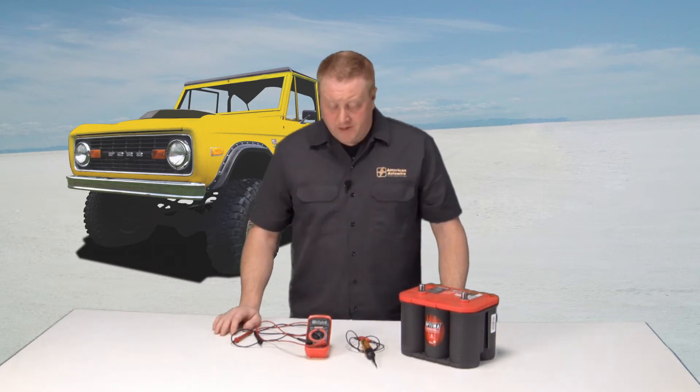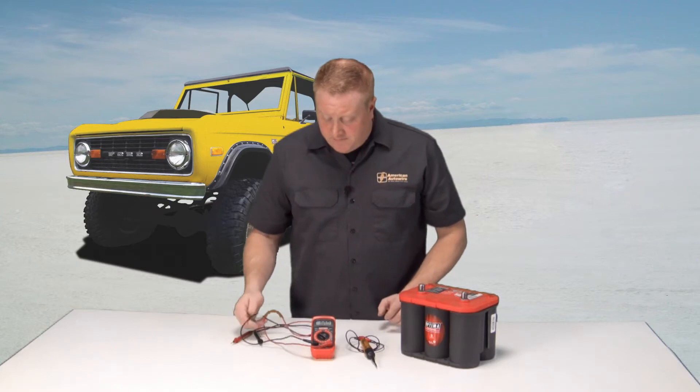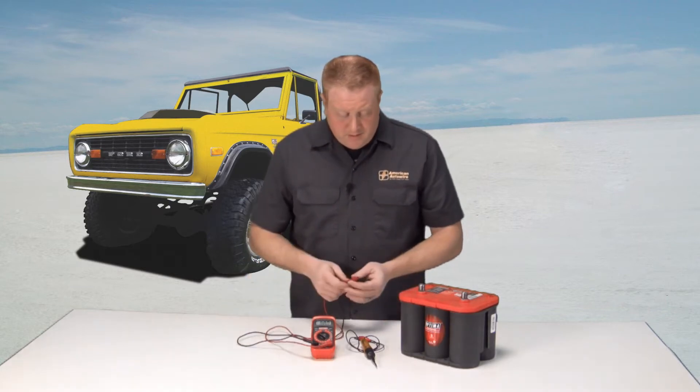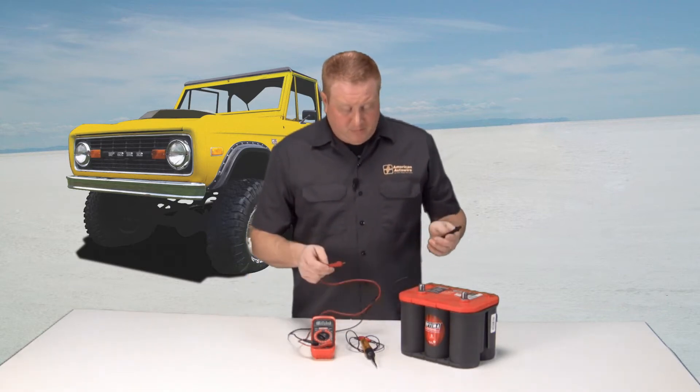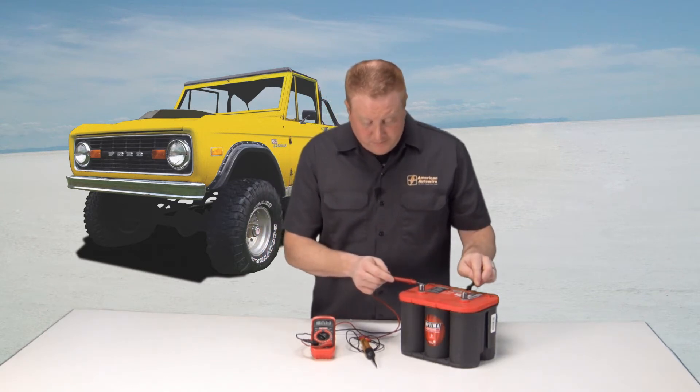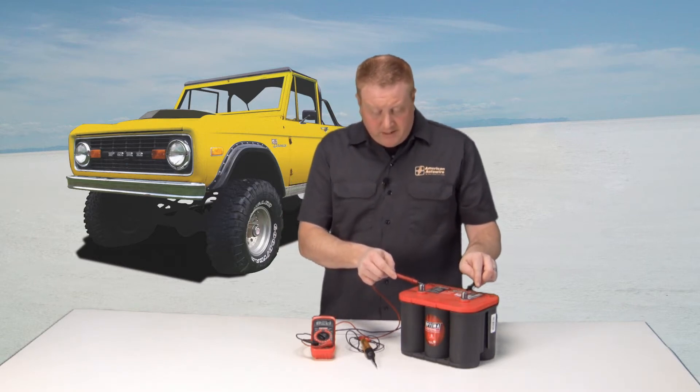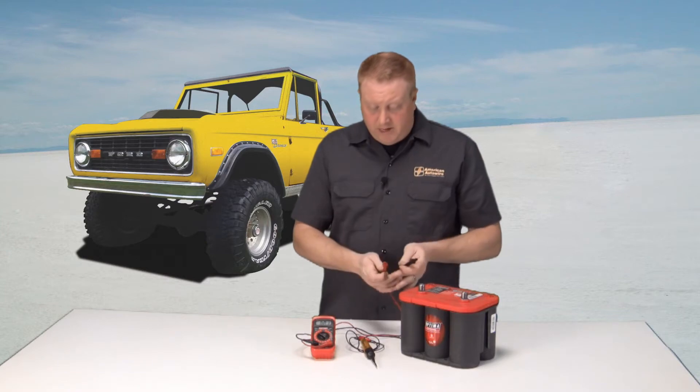It's always a good idea to test your meter and your test light before you go crawling under the dash of your car, just in case there's any problems with the equipment. To test the meter, you're going to set it to 20 volts DC. Run your red lead to the positive side of the battery and the black lead to the negative side. It's coming up with just about 12 and a half volts, which tells me the meter's reading correctly and that the battery has a full charge.